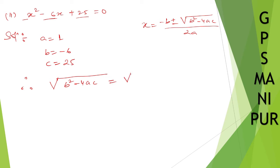√(b² - 4ac) = √((-6)² - 4(1)(25)) = √(36 - 100) = √(-64).